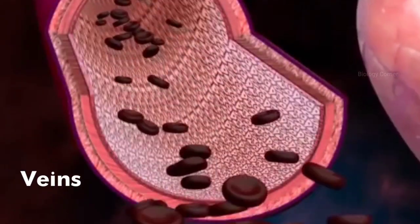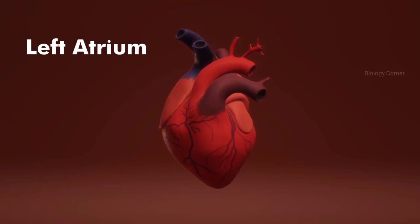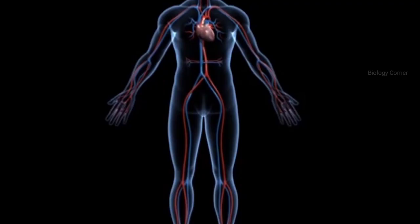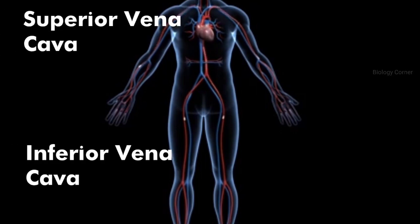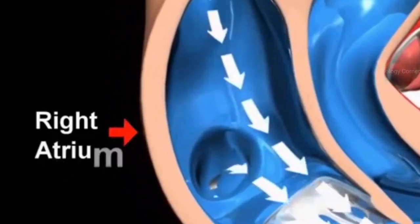Pulmonary veins from the lungs carry oxygenated blood to the left atrium of the heart. In addition, two larger veins, the superior vena cava and the inferior vena cava, receive deoxygenated blood from the whole body and put it in the right atrium of the heart.